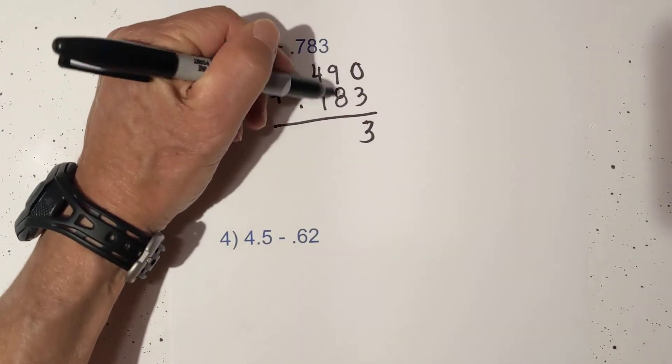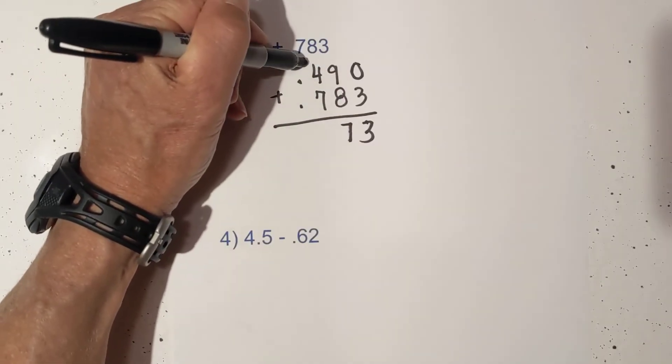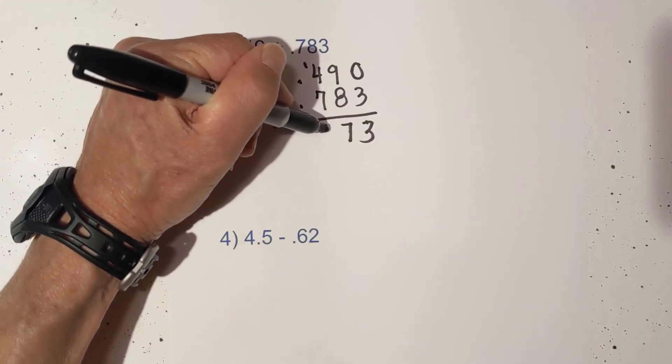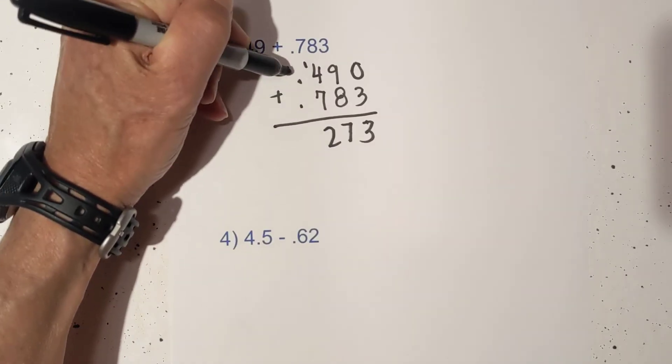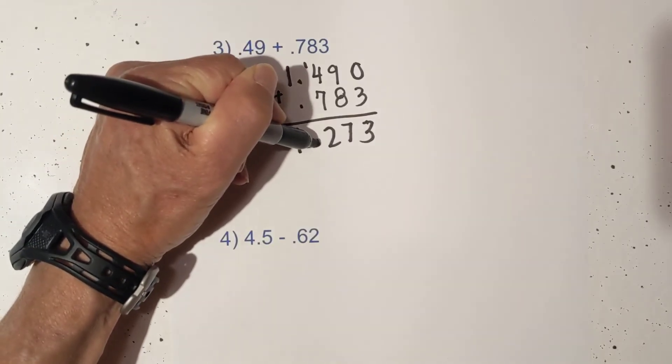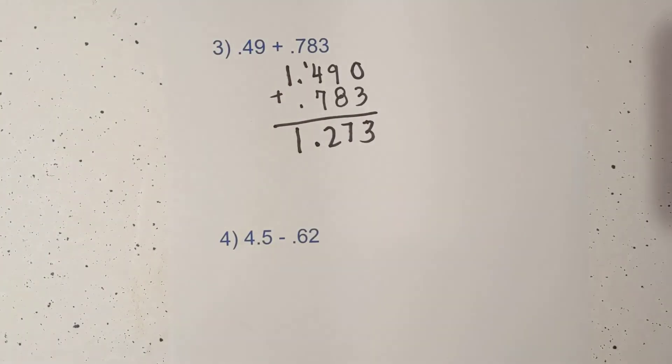So there's a 3, there is 7, bring 1 over: 7, 8, 9, 10, 11, there's 12. Bring down a 1 because you had an extra 10, bring down the decimal. So it is 1.273.